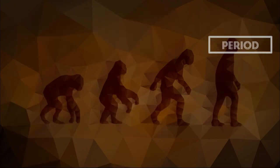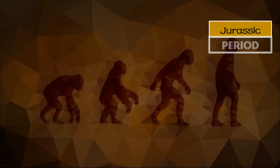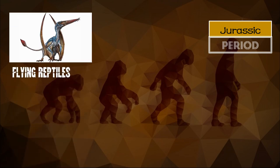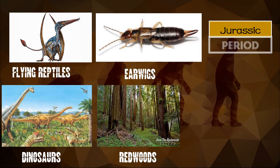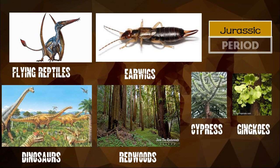The second period under the Mesozoic era is the Jurassic period. The Jurassic period extended from 206 million to 144 million years ago. Life forms in the Jurassic period were flying reptiles, dinosaurs, earwigs, redwoods, cycads, ginkgos, cypress, and early mammalian dicynodonts. The most prominent life form here in the Jurassic period is the age of the dinosaurs.